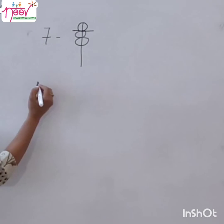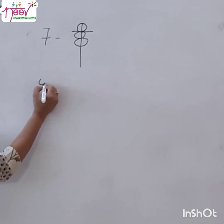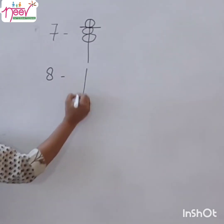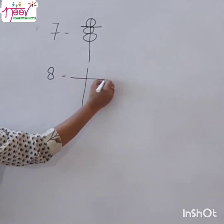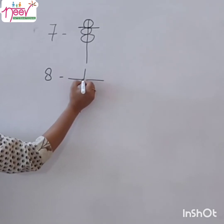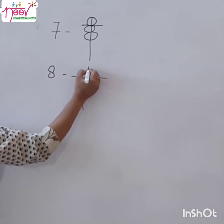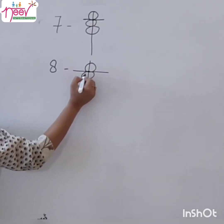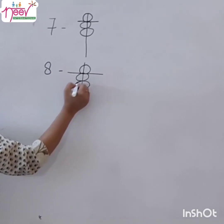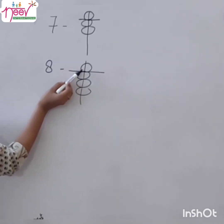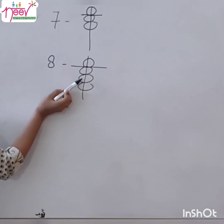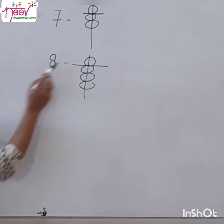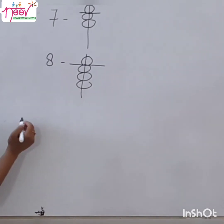Let's see how to place value 8. Make 1's rod. We count: 1, 6, 7, 8. 5 plus 3 is 8.